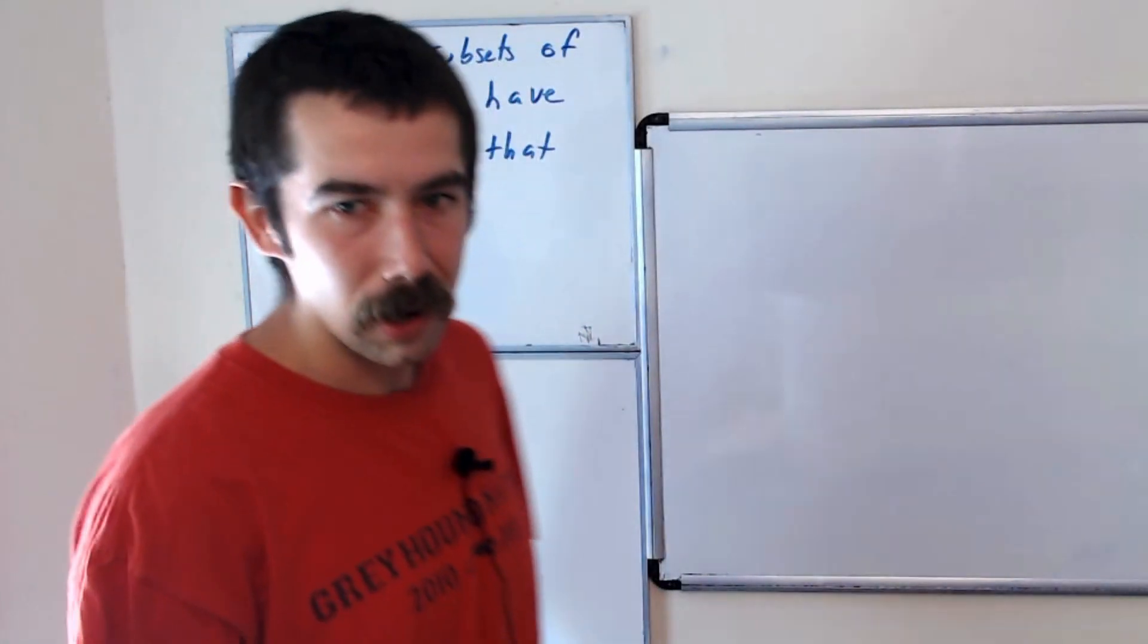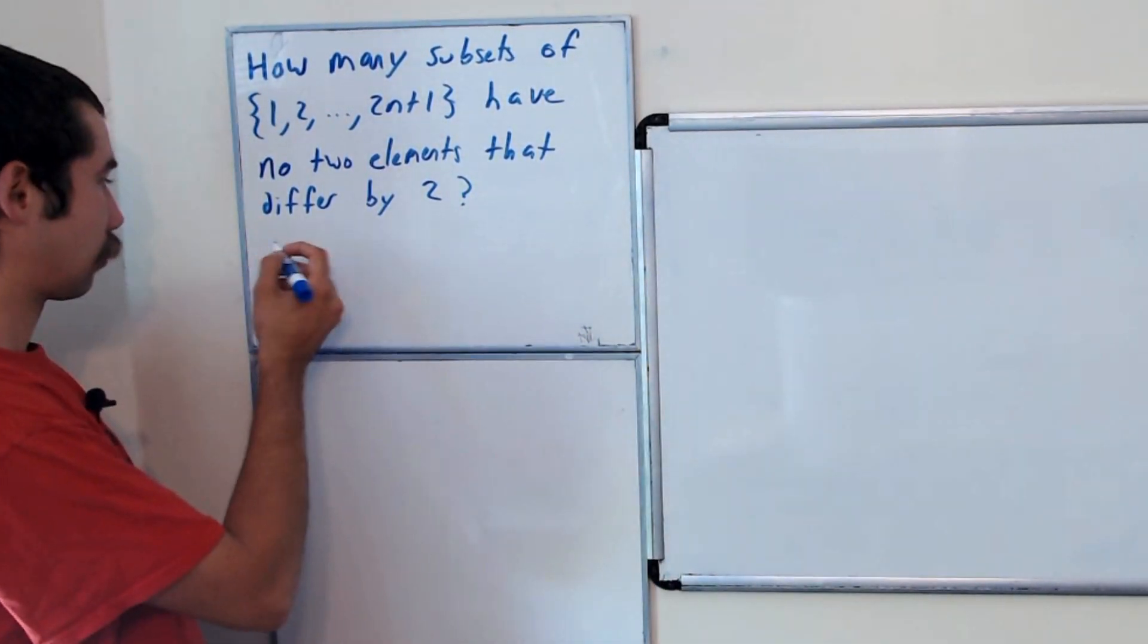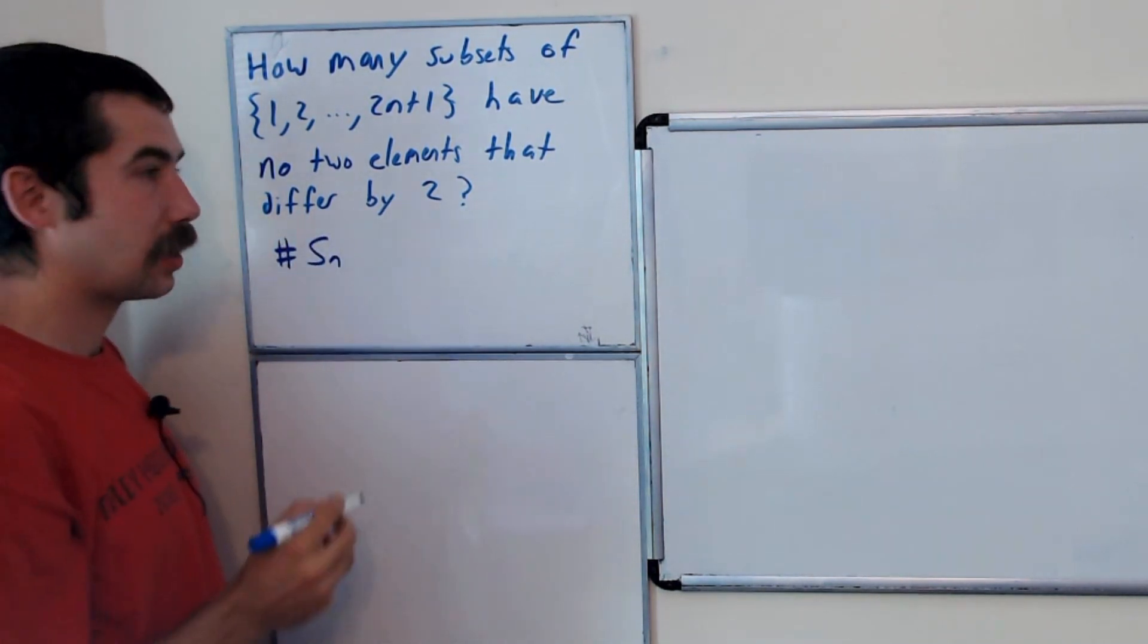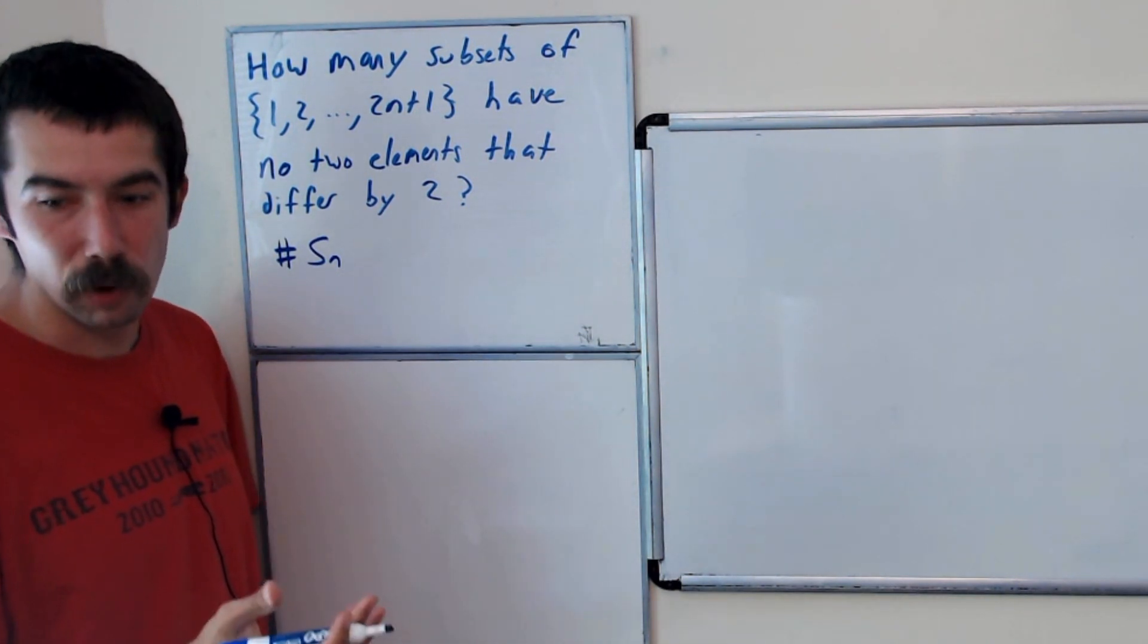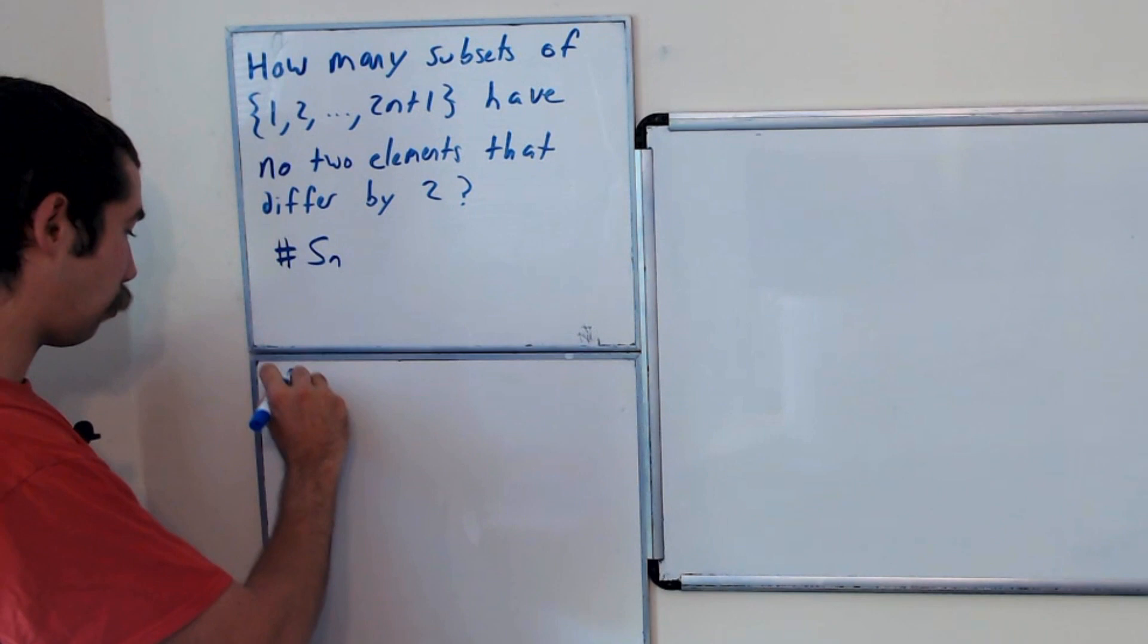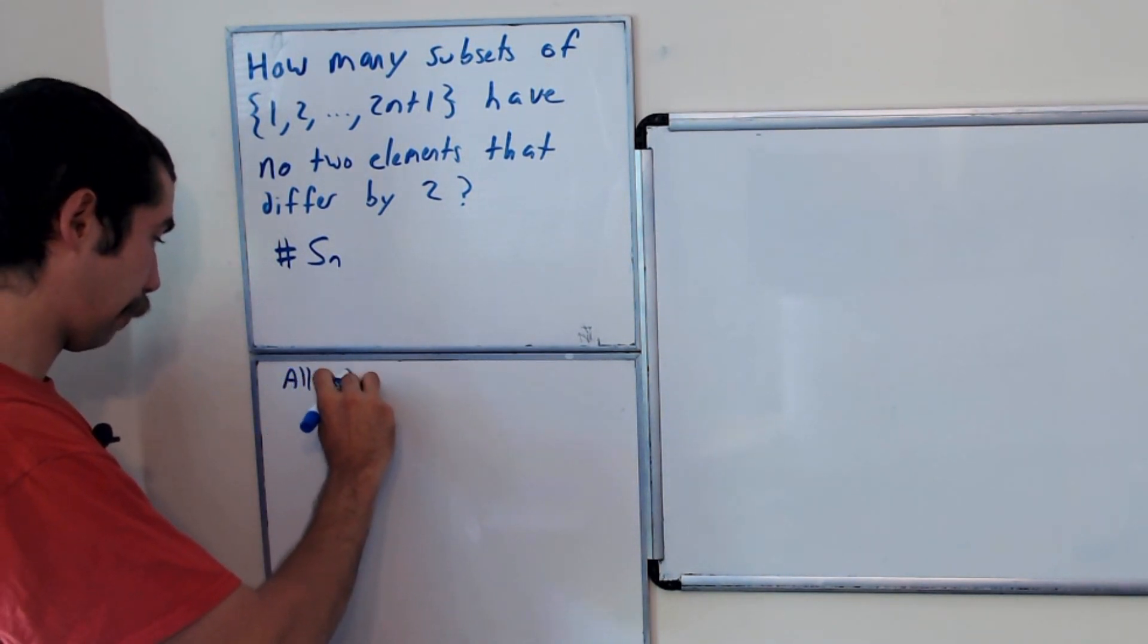Okay, so let's call this number Sn. So we're going to try to find a formula for Sn. So let's take a look at what's allowed and what's not allowed.